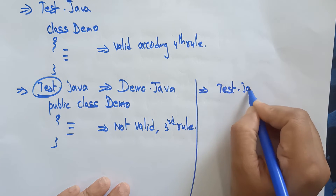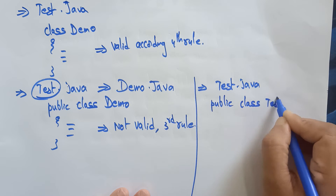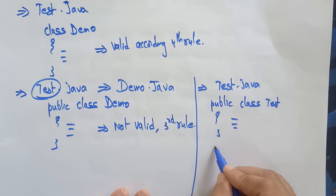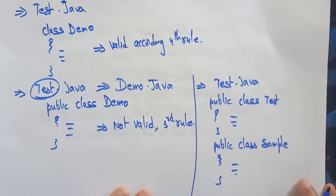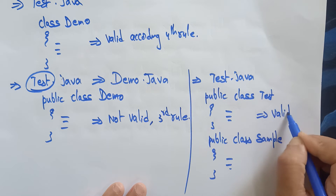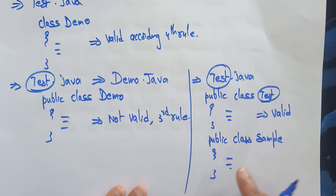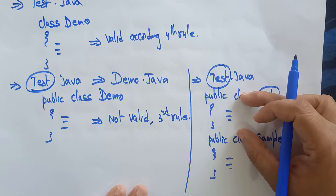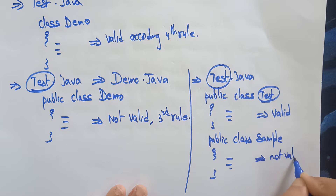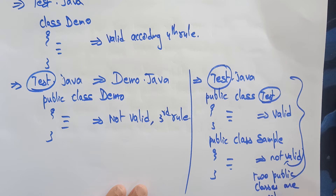Let me take one more example: test.java with public class test and another public class sample. Is it valid? No, it is not valid. Even though the file name matches 'test', in a single source file there should not be two public classes — so the program becomes an error. Two public classes are not allowed.